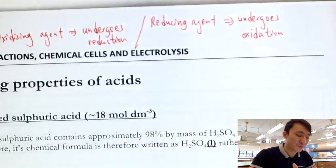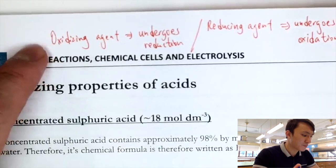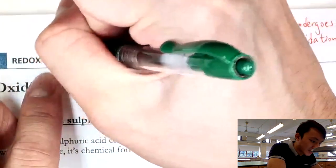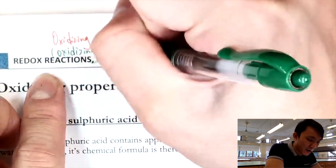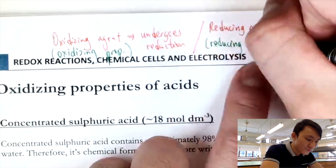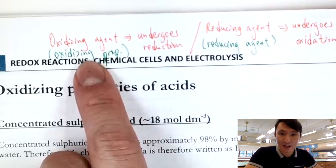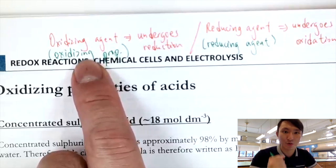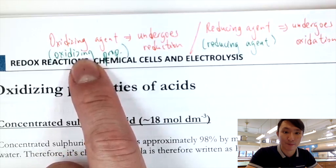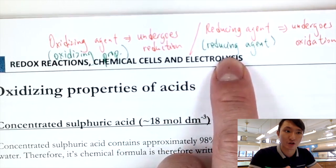We can also describe reagents by their properties: an oxidizing agent has oxidizing properties, and a reducing agent has reducing properties. When we discuss strength, a very strong oxidizing agent has strong oxidizing power — we say it is 'very oxidizing.' Similarly, a strong reducing agent has strong reducing power or strong reducing ability.